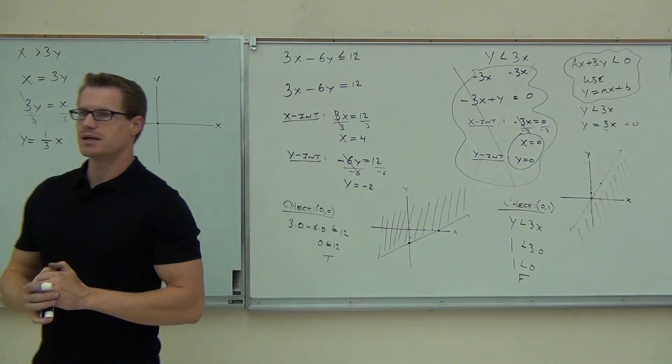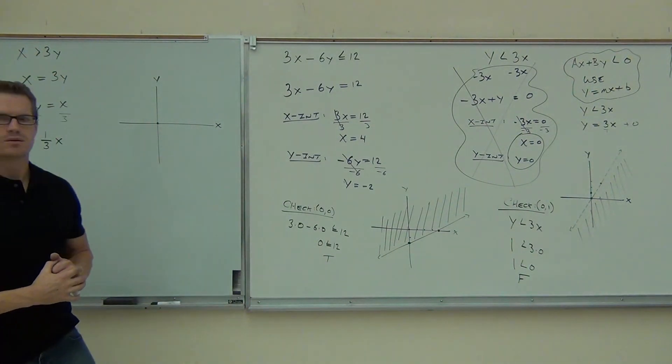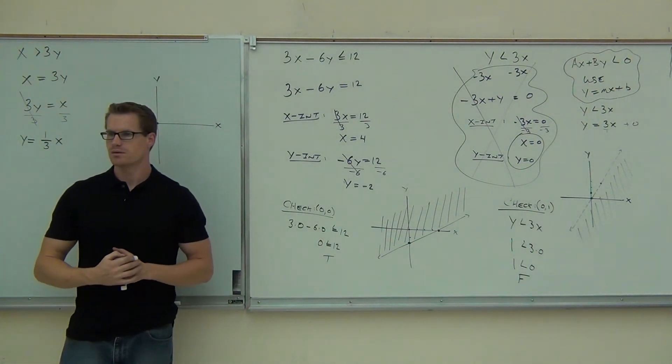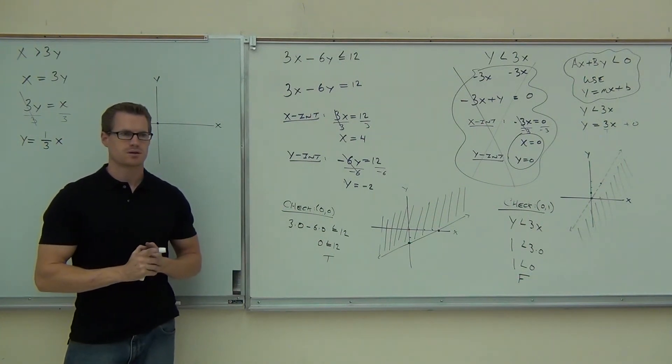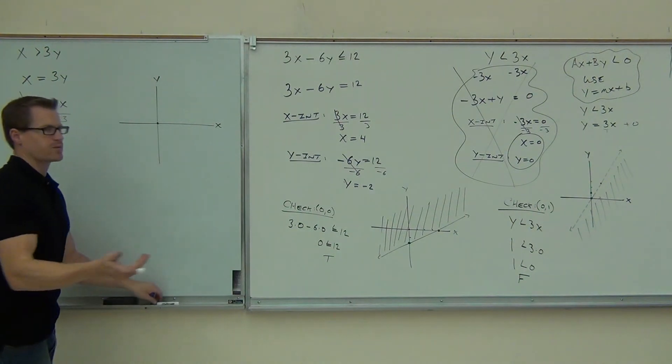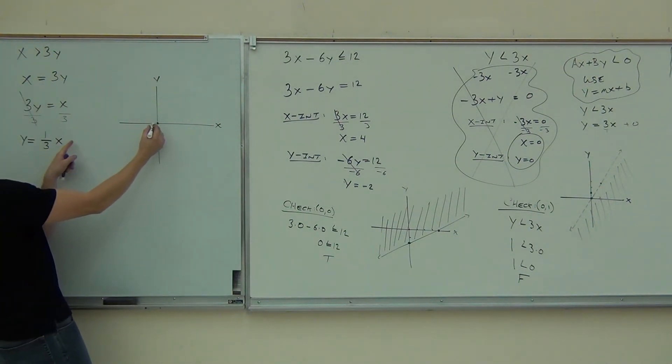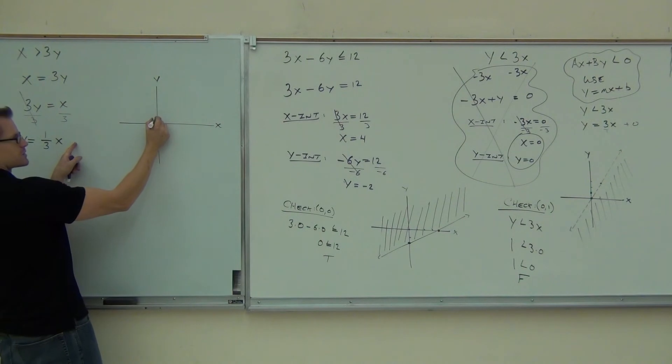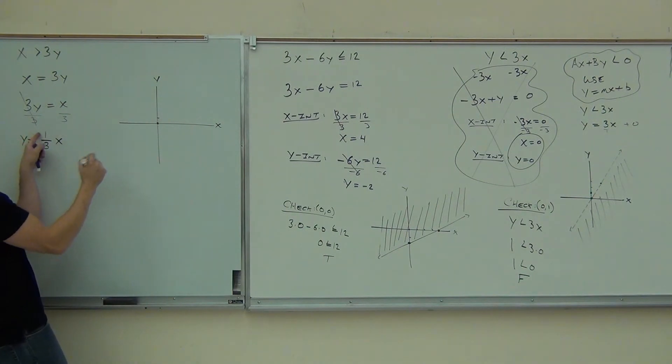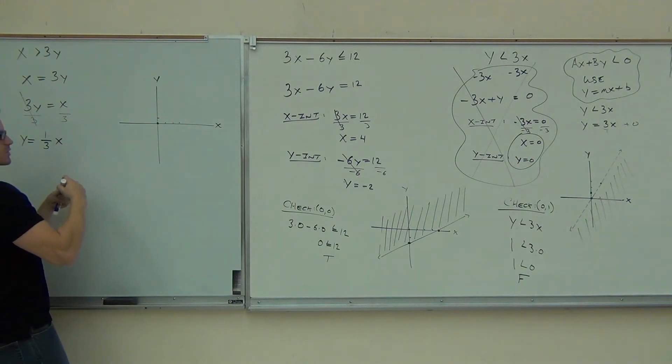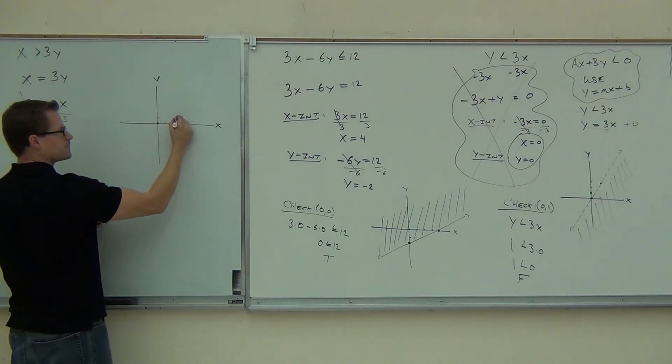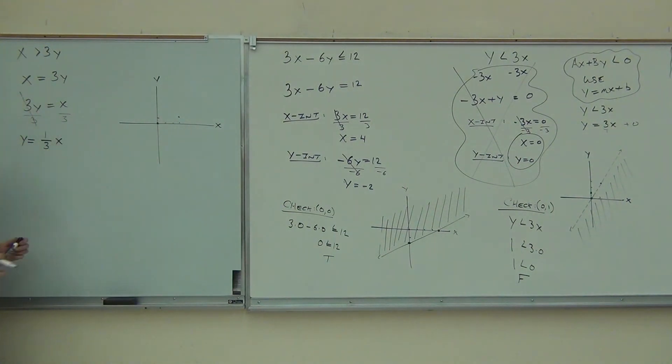What is my slope, everybody? 1 third. 1 third. Am I going to go up or down? Up. How much? 1. And then over to the... Right. How much? 3. From our origin, because we plotted 0 here, because our b was 0, we're going to go up 1, we're going to go over 3, and we're going to put a point there. Up 1, over 3. Let's draw our line.